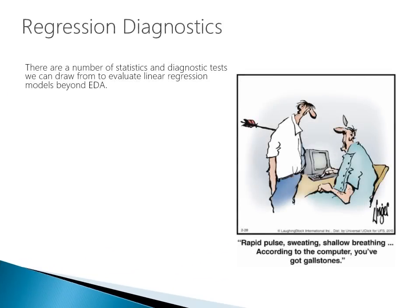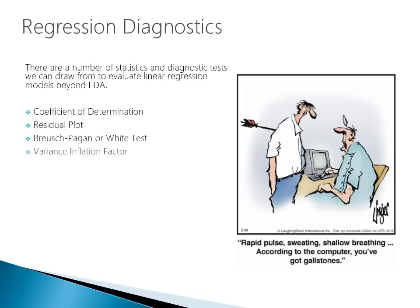There are a number of statistics and diagnostic tests we can draw from to evaluate linear regression models beyond EDA. These include, but are not limited to: the coefficient of determination, residual plots, the Breusch-Pagan or White test, variance inflation factors or VIFs, influential observations, leverage points, and Cook's distance. I'm going to get into these topics in detail in the upcoming slides.